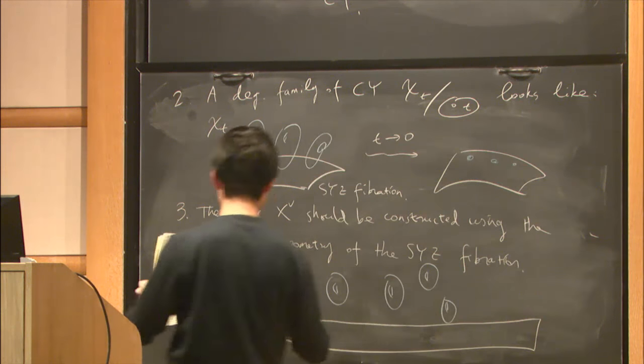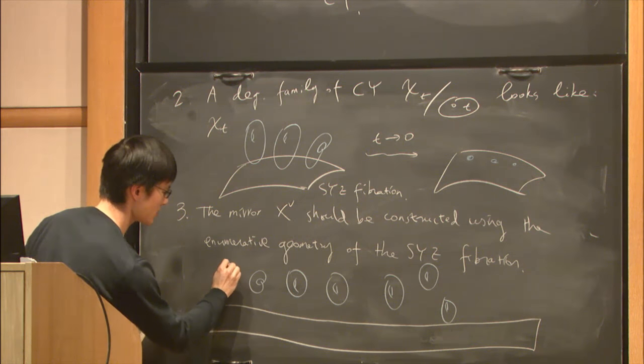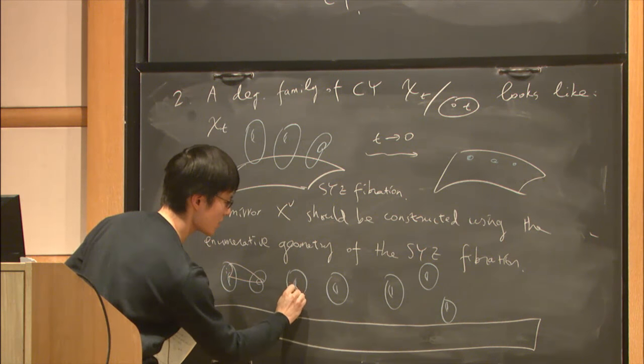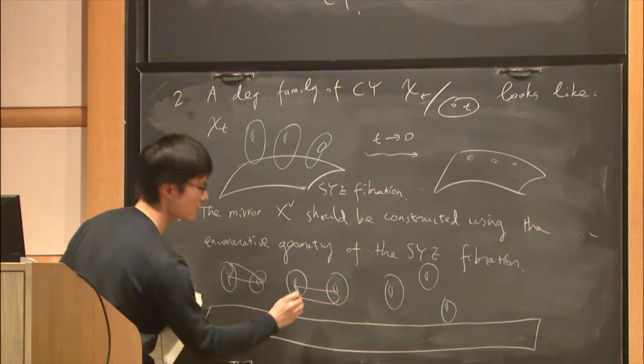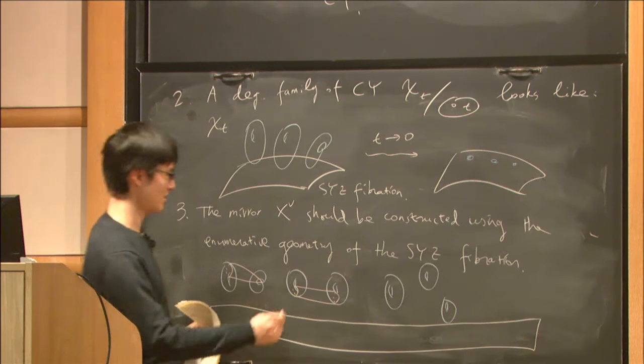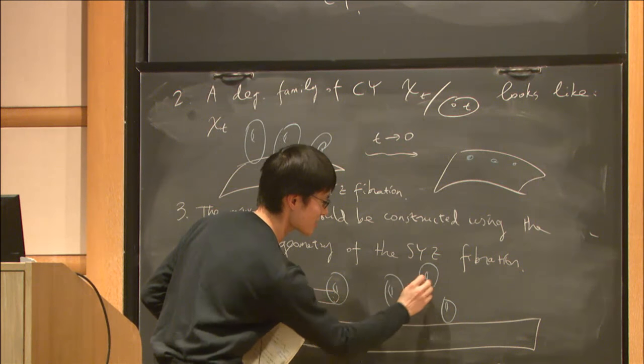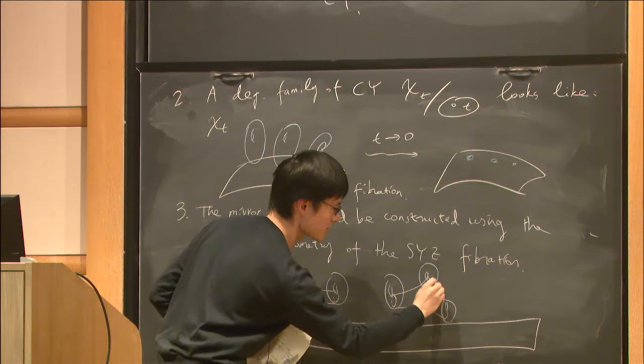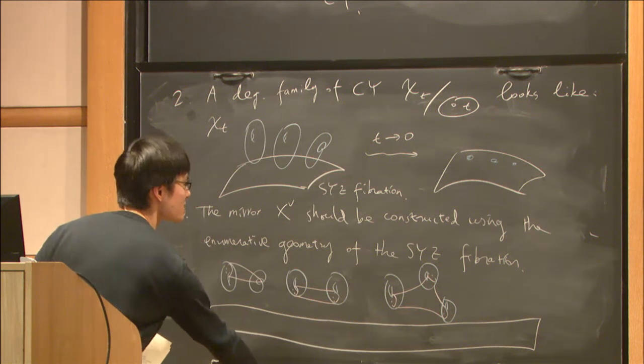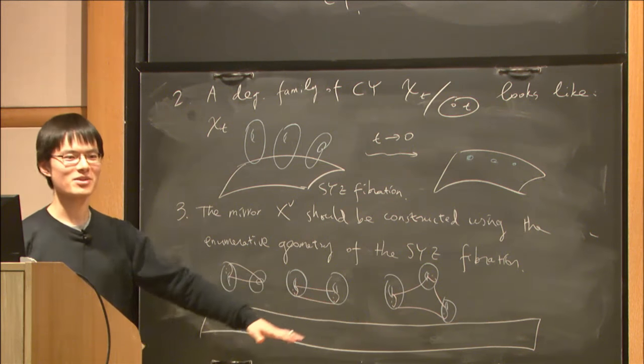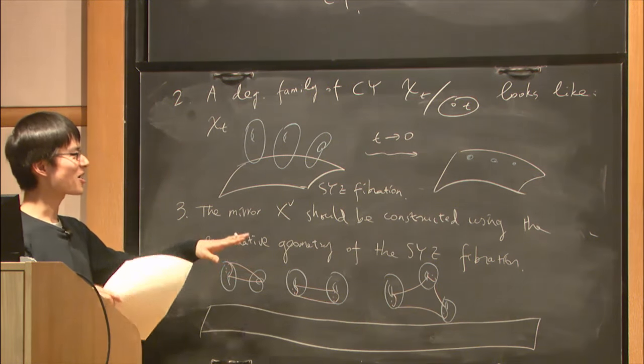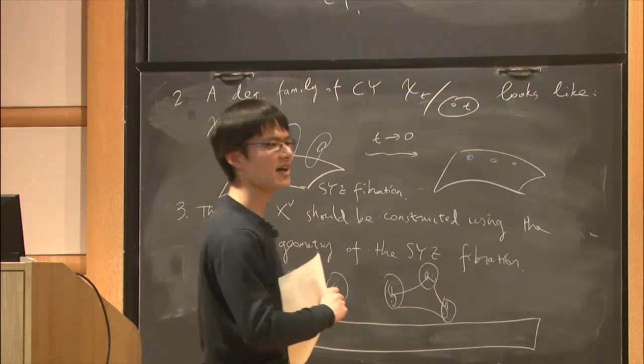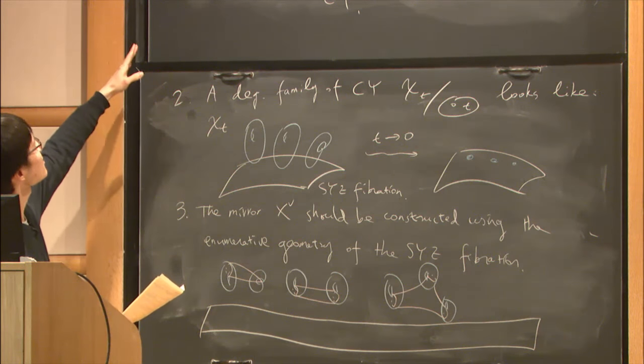For example, we want to count holomorphic disks with boundaries on one torus, holomorphic cylinders with boundaries on two torus fibers, and more generally, a pair of pants with boundaries on three fibers. All these counting numbers are supposed to help us construct the mirror X-check. That's their idea.